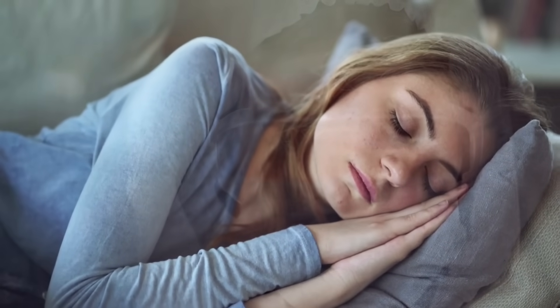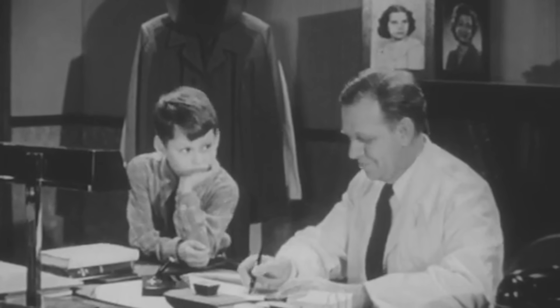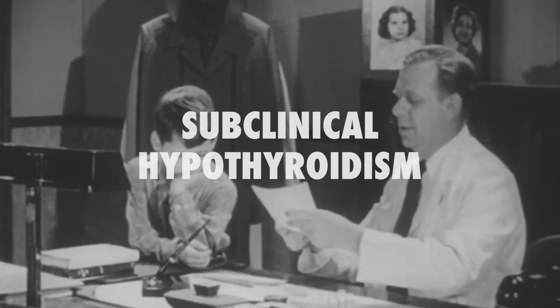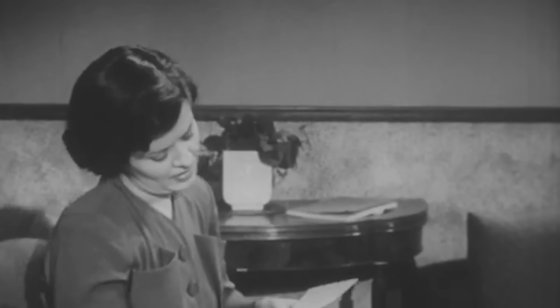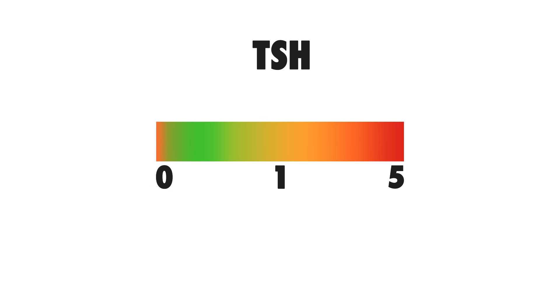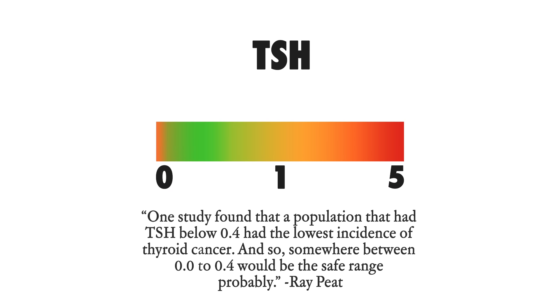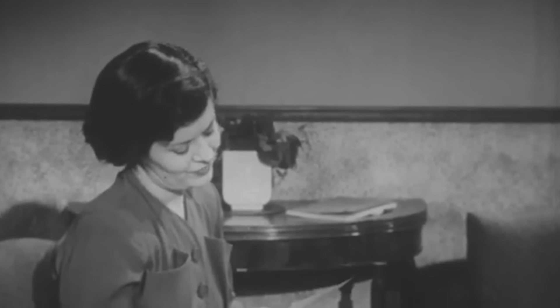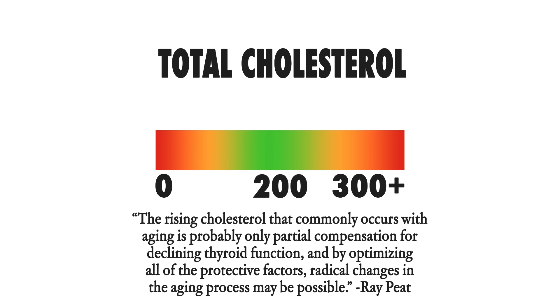Many times when people suspect that they could have thyroid issues, their blood work comes back normal. And even though the lab work can look normal, this can be much different at the cellular level. This is known as subclinical hypothyroidism, and is another reason hypothyroidism is not recognized nearly as much as it should be. TSH is a common thyroid blood test, and the normal range is around 0 to 5, but this has changed a lot throughout the years. Ray Peat believed that under 1 and actually close to 0 is optimal, but TSH can still appear low even if thyroid function is poor due to suppression from cortisol and adrenaline. This is one of the reasons that TSH is not a definitive test of thyroid function. Total cholesterol is also a useful blood test for thyroid.